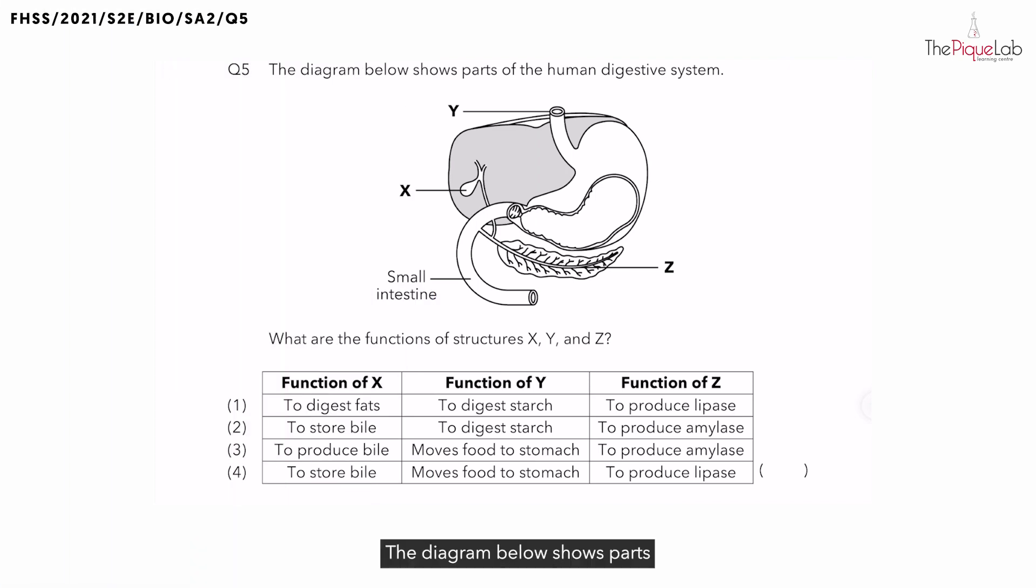Question 5. The diagram below shows parts of the human digestive system and we're supposed to determine the functions of structures X, Y, and Z. Let's begin by labeling those structures. If you need to pause the video, you can do that now.